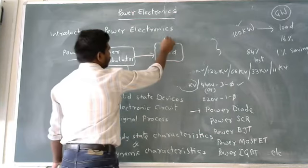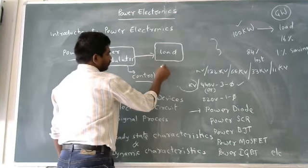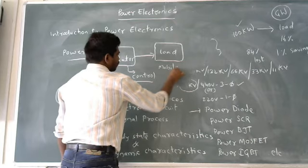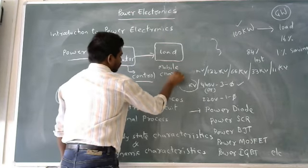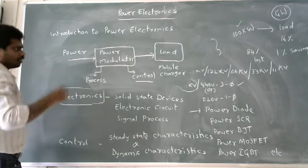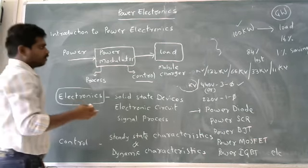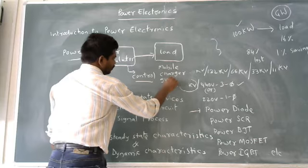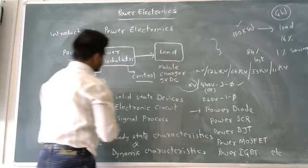Suppose, let us take one example - this is a mobile charger. The mobile charger needs 5 volt DC power.